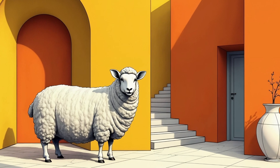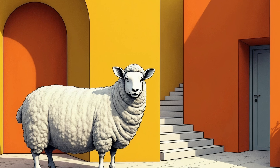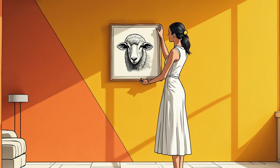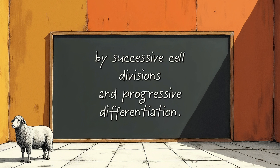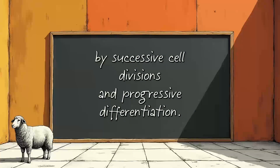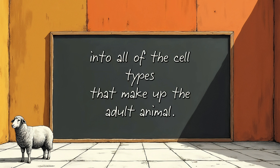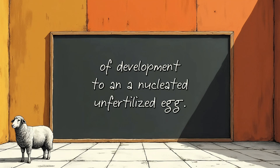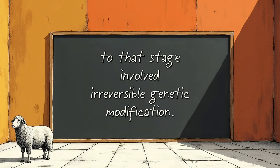Let's go from theory to practice by looking at a notable example. Consider how the famous paper announcing the first mammal cloned from an adult cell — Dolly the sheep — could be reframed using the inverted pyramid approach. Here's the opening excerpt from the original abstract: 'Fertilization of mammalian eggs is followed by successive cell divisions and progressive differentiation, first into the early embryo and subsequently into all of the cell types that make up the adult animal. Transfer of a single nucleus at a specific stage of development to an enucleated, unfertilized egg provided an opportunity to investigate whether cellular differentiation to that stage involved irreversible genetic modification.'